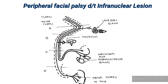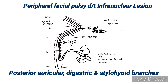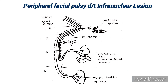The nerve to stapedius arises at the level of the second genu supplying the stapedius muscle, and the chorda tympani branch arises just proximal to the stylomastoid foramen supplying taste to the anterior two-thirds of the tongue. After leaving the stylomastoid foramen, muscular branches are given to the posterior auricular, posterior belly of the digastric, and stylohyoid muscles. The facial nerve then enters the parotid gland and divides into two main trunks — zygomaticotemporal and cervicomandibular — with temporal, zygomatic, buccal, mandibular, and cervical branches supplying the facial muscles.